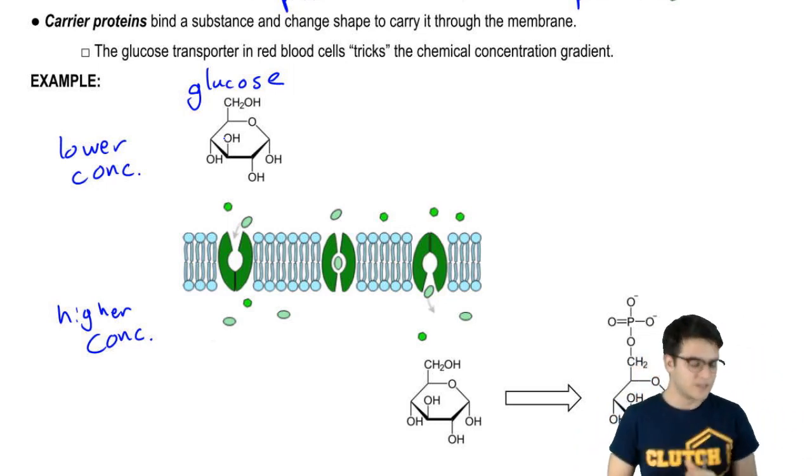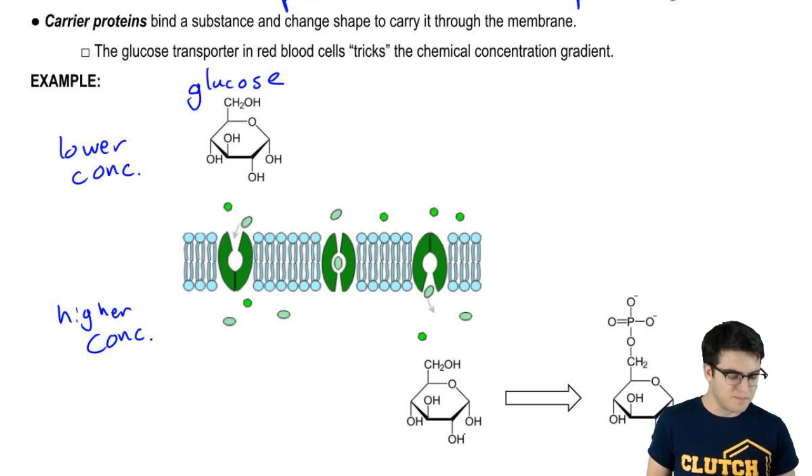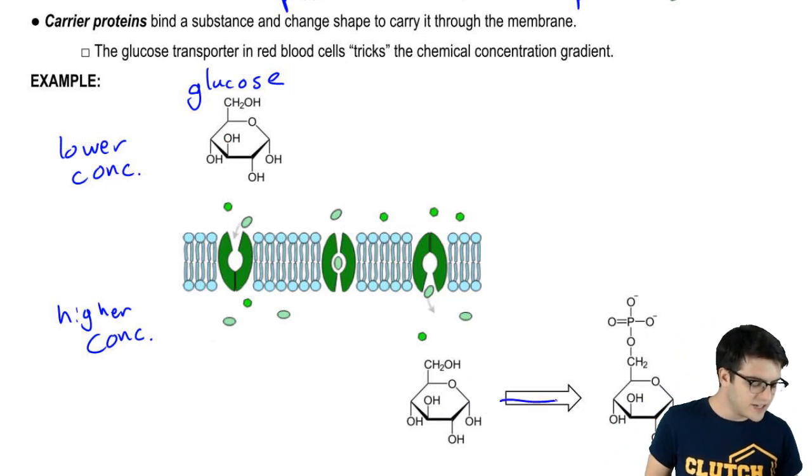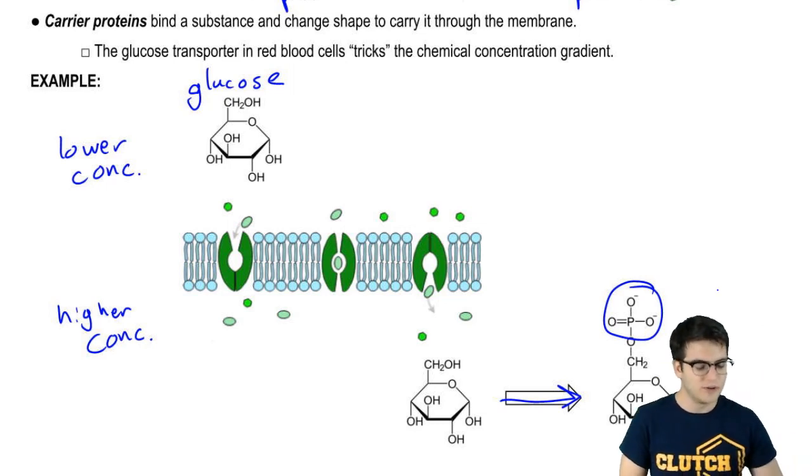Well, that's because as soon as the glucose makes it through to the other side, it is converted into this molecule, which is called glucose 6-phosphate. So basically, a phosphate group gets added onto our glucose.